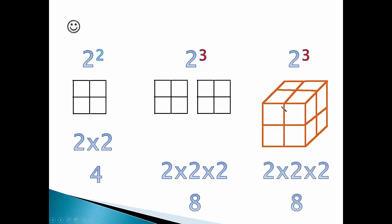We can also look at it as a cube. 2 cubes this way, 2 cubes this way, 2 cubes that way. There are 8 cubes here even though you can't see them all. 2 to the third power is 8.